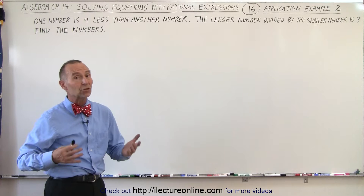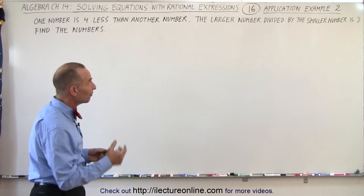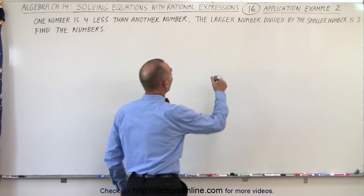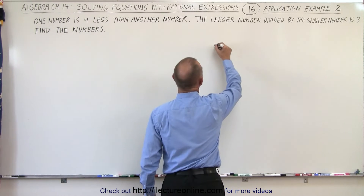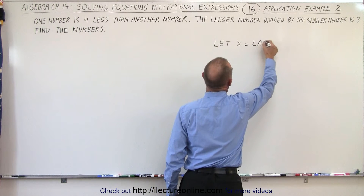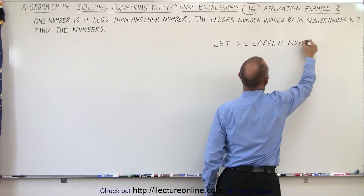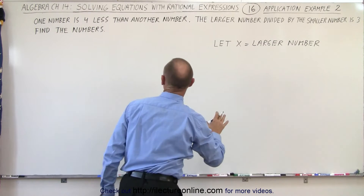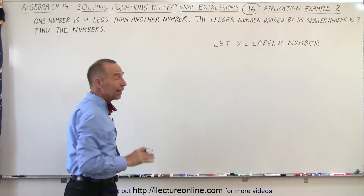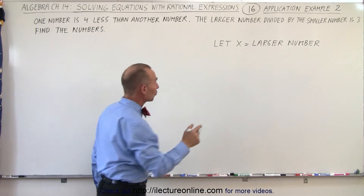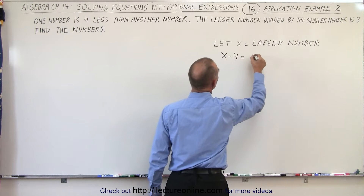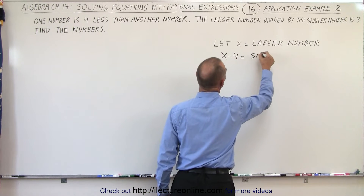So again, we need to start by defining the two numbers. So let x equal the larger number. Then how do we find the smaller number? Well, the other number is 4 less. So the smaller number, x minus 4, would be equal to the smaller number.